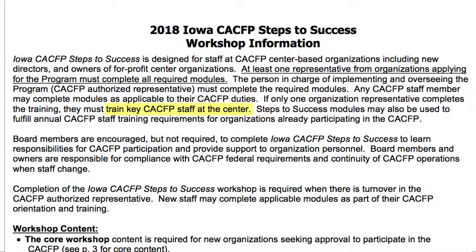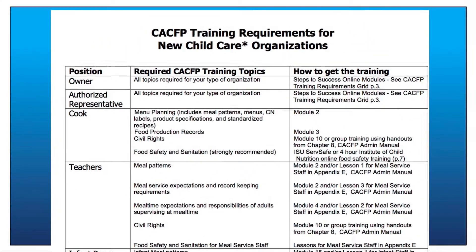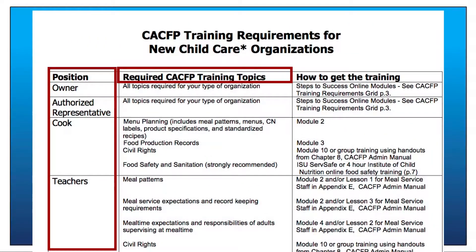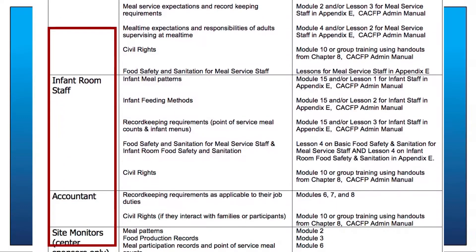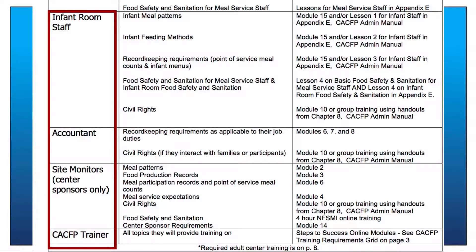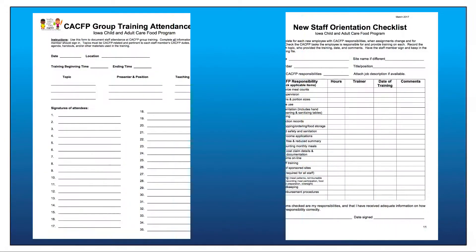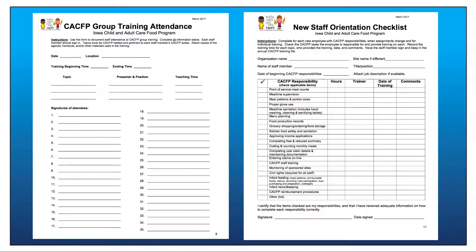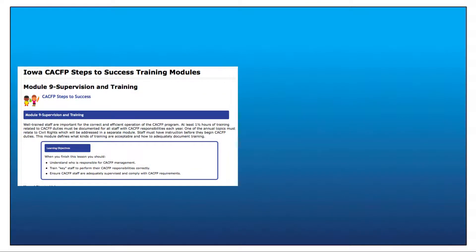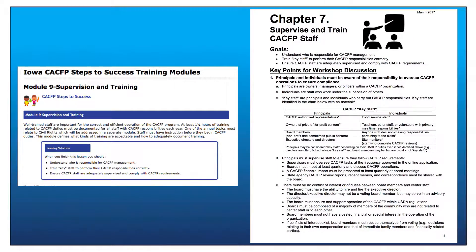Next, train all key staff members who will have CACFP responsibilities. The topics required for each staff position are on page 4 of the training flyer. Staff at each site must be adequately trained to carry out their specific CACFP duties, and all CACFP training must be documented. Refer to Module 9 covering Chapter 7 for specific information about training and documentation requirements.